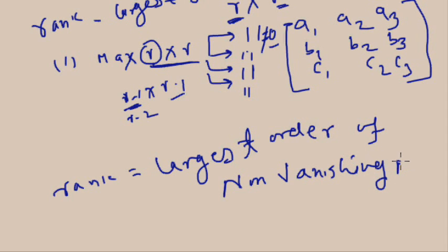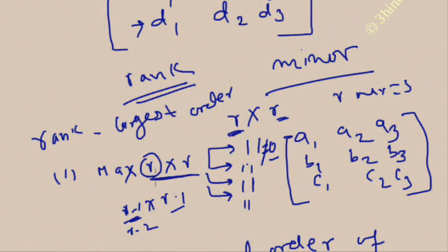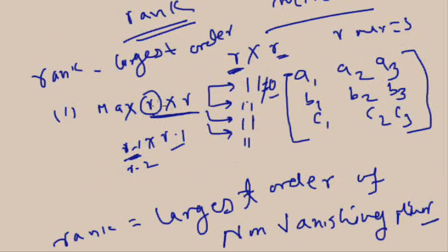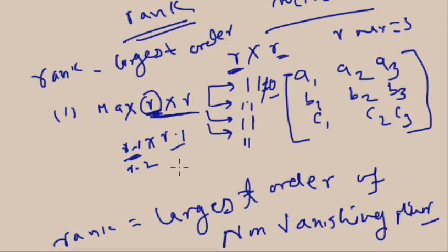The meaning of rank is: rank is the largest order of a non-vanishing minor. The maximum possible order of a minor is R. If any R×R minor has a determinant that is not zero (non-vanishing), then that order becomes the rank. If all values are zero, then go to the next lower order. This is the meaning of rank.